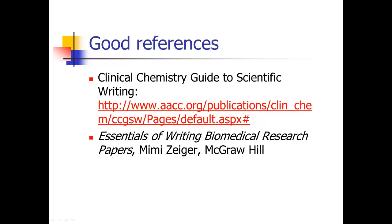I wanted to give a couple of good references for further reading about the format of an original manuscript. There's a great series of articles published by Clinical Chemistry — even if you're not a chemist, they're generally written and apply to most scientific disciplines, covering how to write an abstract, an introduction, and so on. If you're in the biomedical sciences, there's also a really nice textbook by Mimi Zeiger on the essentials of writing biomedical research papers, which goes through each section in much more detail than I'll cover in these lectures.